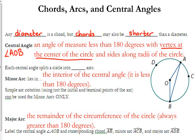Now, every central angle splits a circle into two arcs, and by the arc, I'm referring to portions of the circle. The minor arc lies in the interior of the central angle. It is always less than 180 degrees.